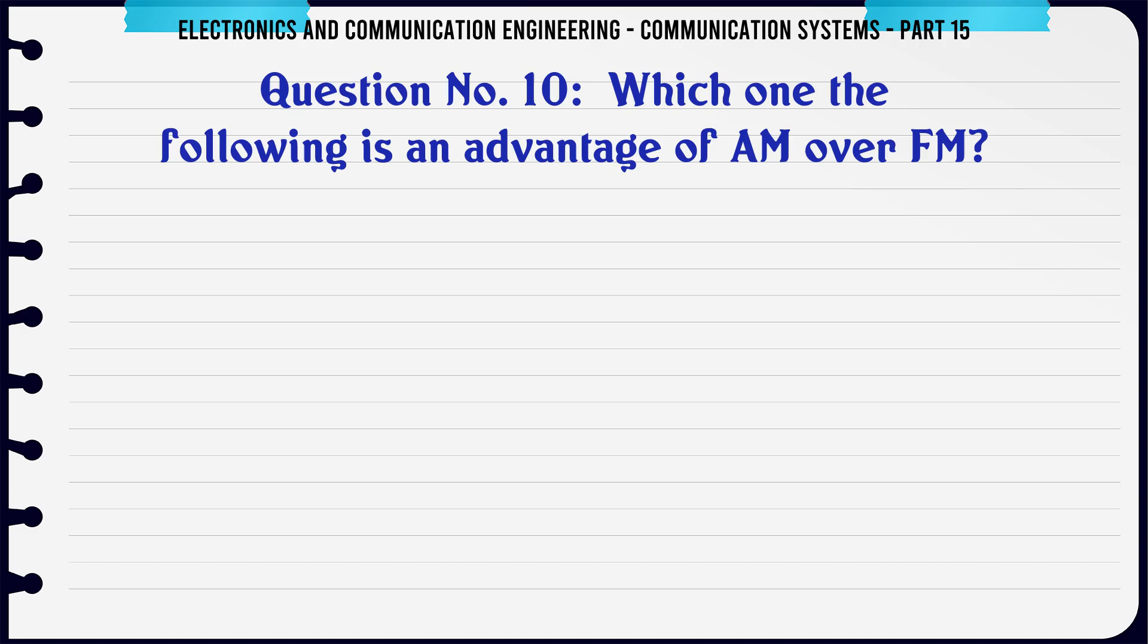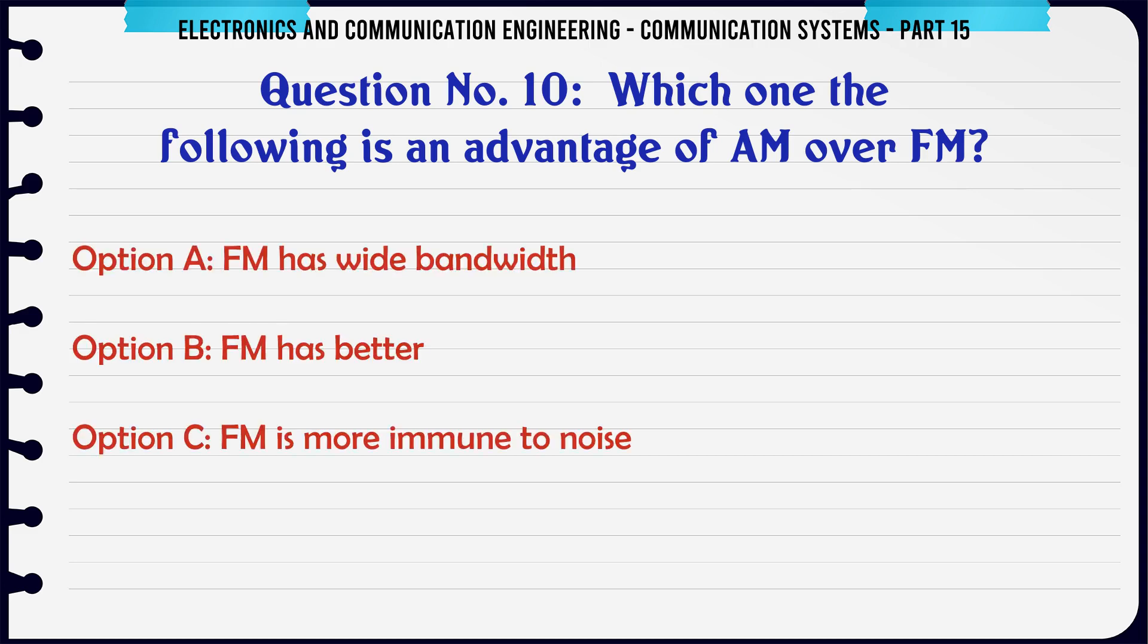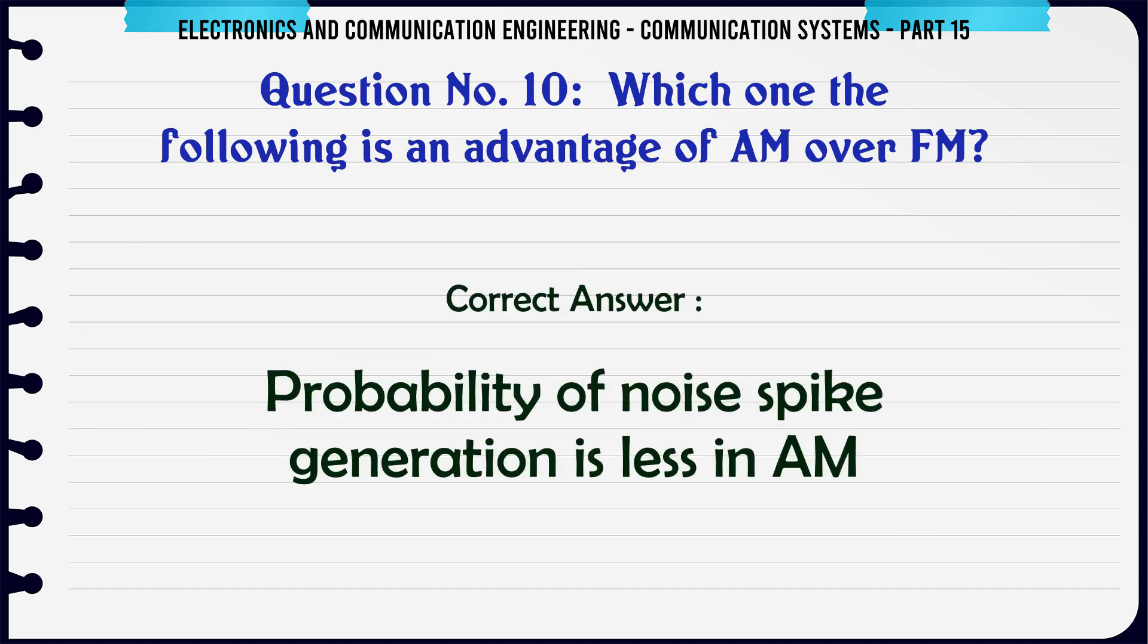Which one of the following is an advantage of AM over FM? a FM has wide bandwidth, b FM has better, c FM is more immune to noise, d probability of noise spike generation is less in AM. The correct answer is probability of noise spike generation is less in AM.